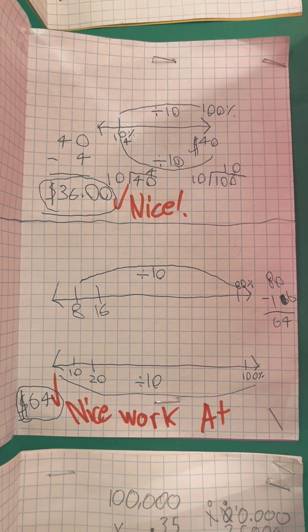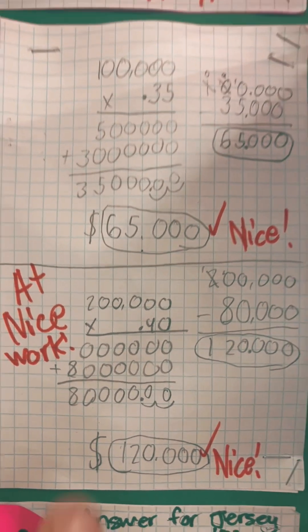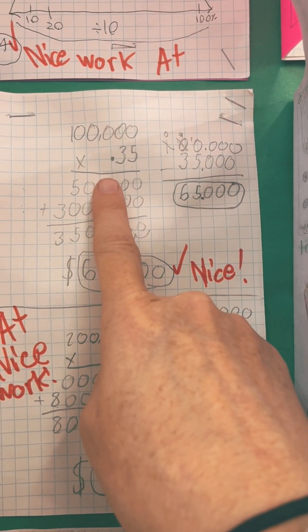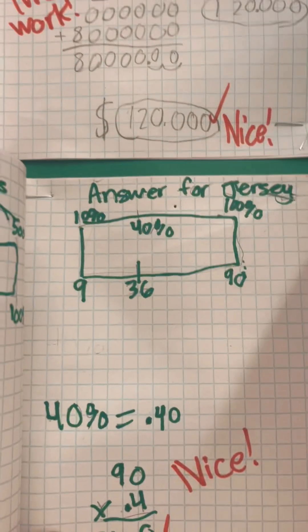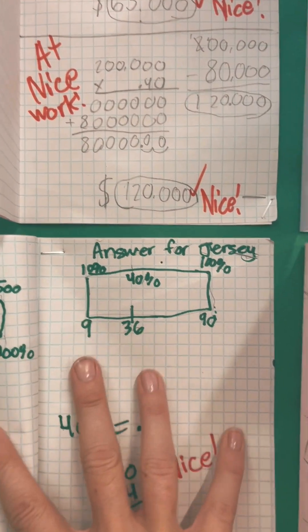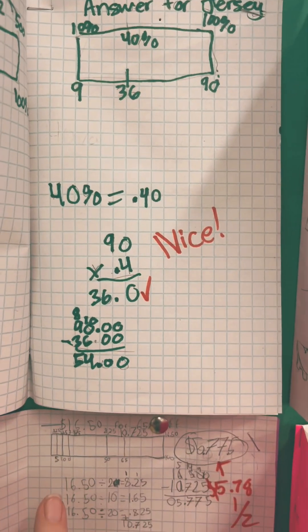Multiple representations are really important for your students because this strategy might work well for one student, but other students need that visual model to help them make sense. Using these multiple models is actually found in the math research to be one of the best ways to teach mathematics.